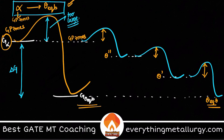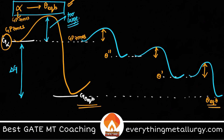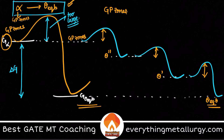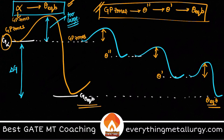It's like going to school on a cycle — if you go directly on the highway, you spend a lot of time and energy. Instead, you take some shortcuts through smaller streets so you can save energy and reach in less time. That is exactly what is happening here: alpha takes shortcuts through GP zones, theta double prime, and theta prime rather than going directly to theta equilibrium, in order to save the overall energy of the system.